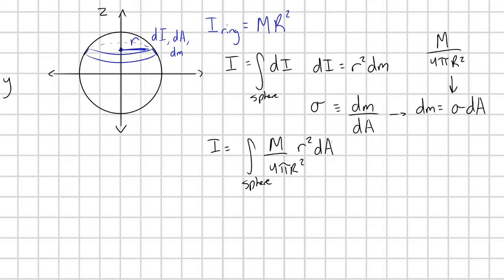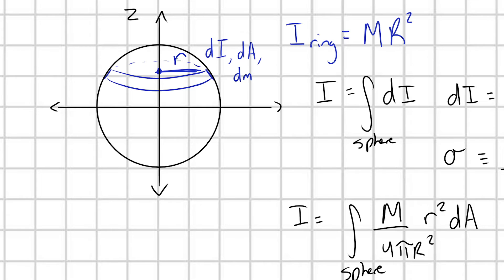All right, so the next step here, we have to actually think about what is the area that each of these rings occupies. This should be pretty easy because each of these rings, if they have some radius r, what's this dimension here? Well, this is just the circumference of a ring. So this is going to be 2 pi times little r. Now we need this dimension here. Let's label this as dL.